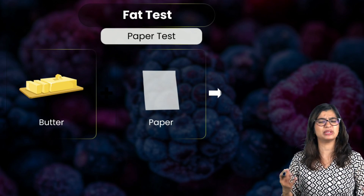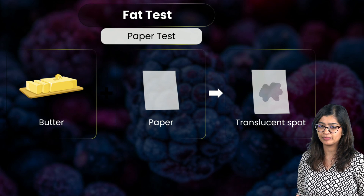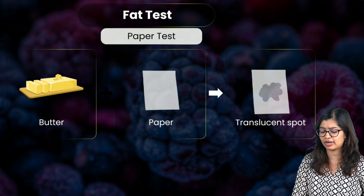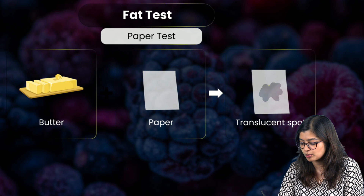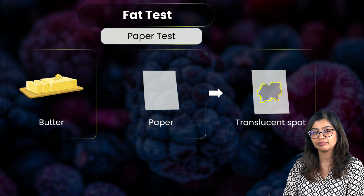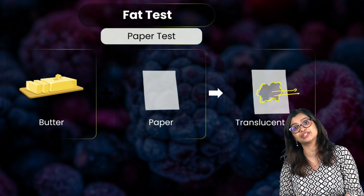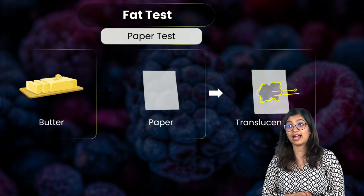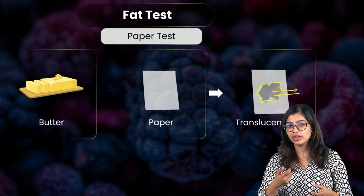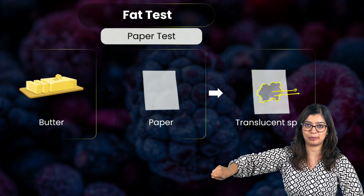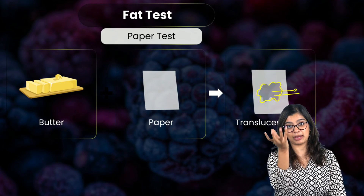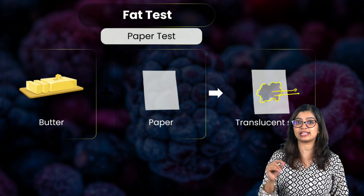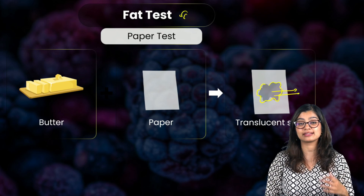The fat test is done using a translucent paper or butter paper. When you smear a food item like butter onto thin paper, the spot becomes translucent, indicating that the food is rich in fat. For example, when deep-fried pakodas are placed on a newspaper, the area where the paper touches the food becomes translucent — confirming that fats are present.